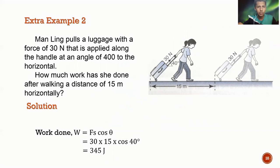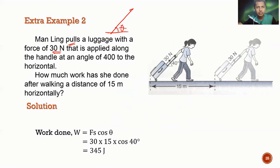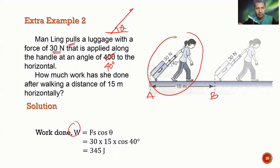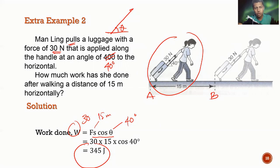Example 2: a woman pulls luggage with a force of 30 N along the handle at an angle of 40 degrees to the horizontal. She walks a horizontal distance of 50 meters. Using W = Fs cos θ: F = 30 N, S = 15 meters, θ = 40°. The work done is 345 Joules.